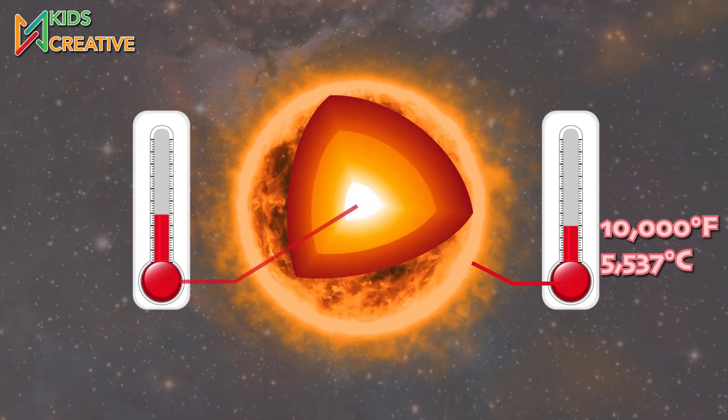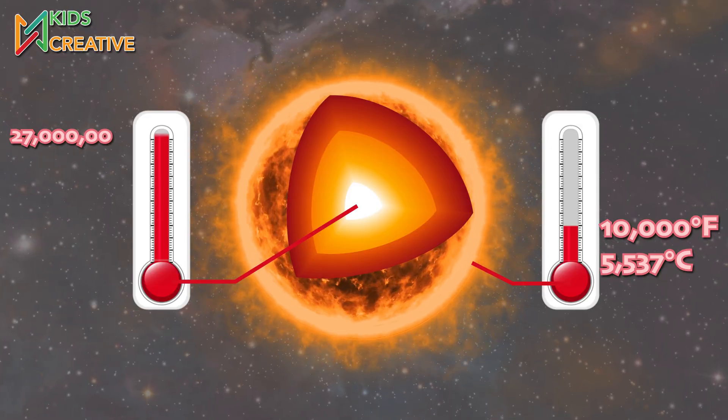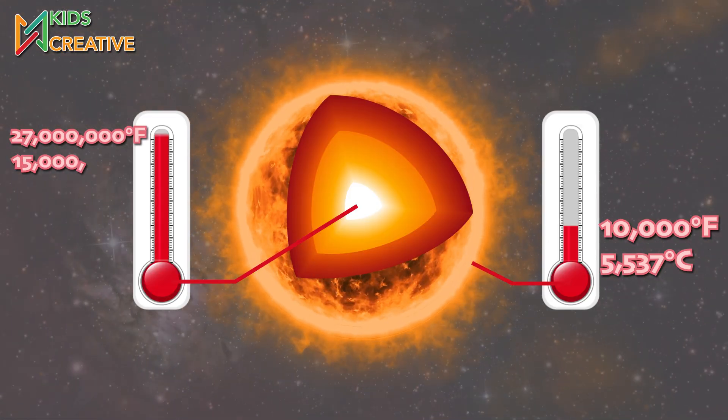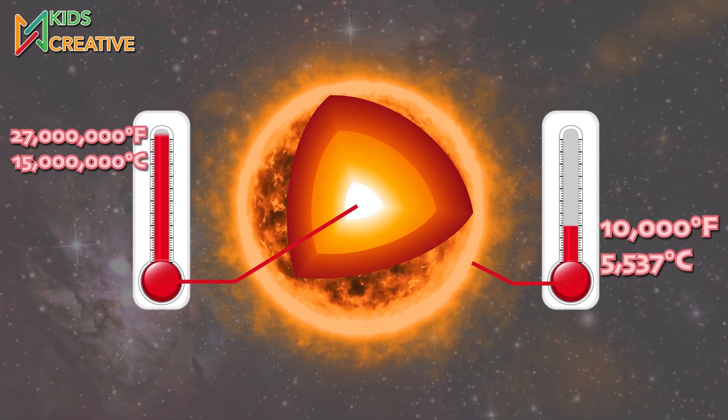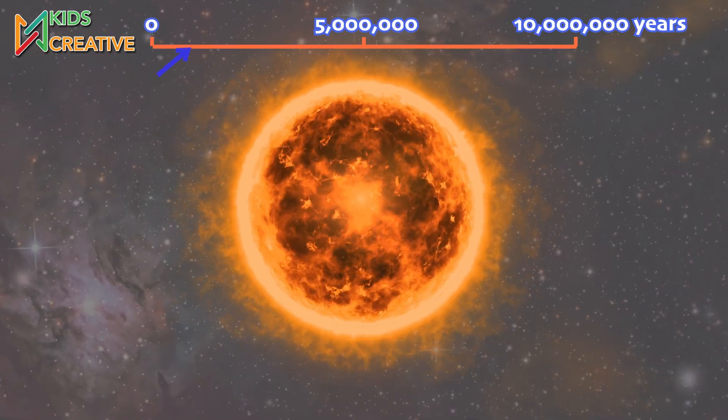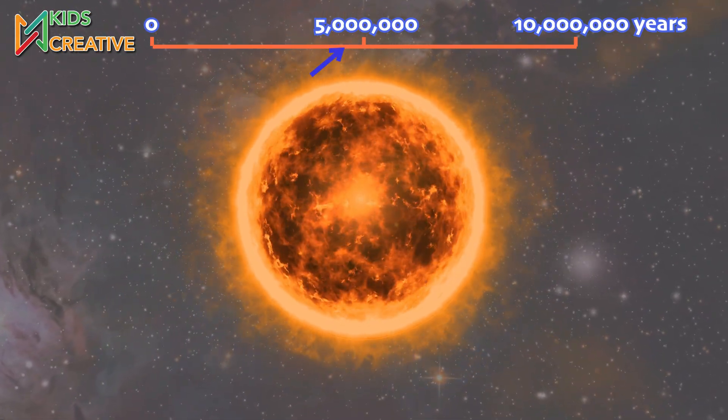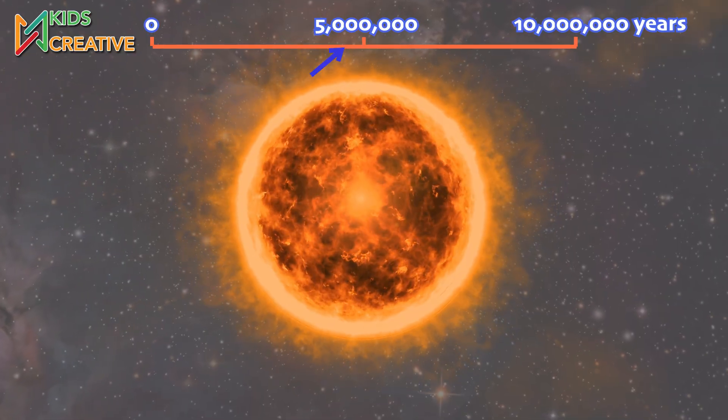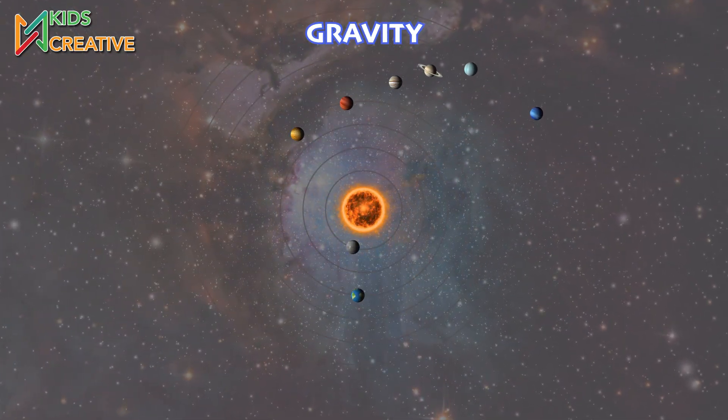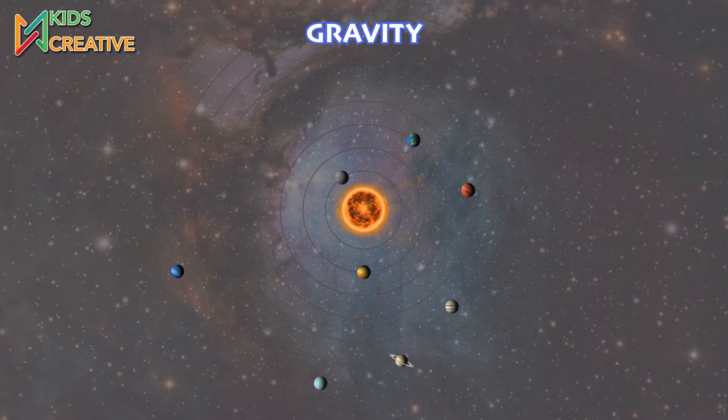It's been around for 4.6 billion years and still has 5 billion years left. The Sun's gravity keeps all planets in orbit around it.